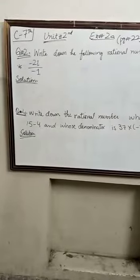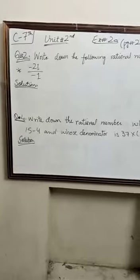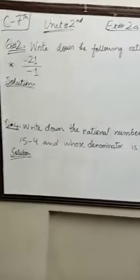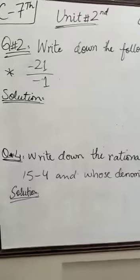We have given minus 21 divided by minus 1. Minus sign means that if it is minus, if it is minus then it is plus. And if it is minus, then it is plus. Now we will start with this.